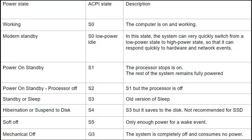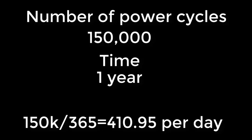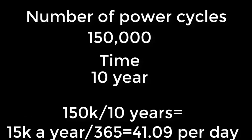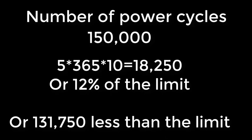This is where things get a bit tricky, since you have to look at your personal patterns. But let's say you were to eat through the power cycles in one year — you would have to do 410 power cycles a day. But let's say you want the thing to last for 10 years. This means you can get away with about 41 power cycles per day. So let's go with a realistic number of 5 power cycles a day — you're looking at after 10 years, 18,250 power cycles, or about 12% of the estimated limit.